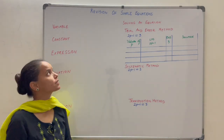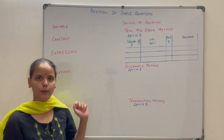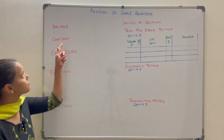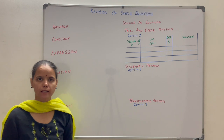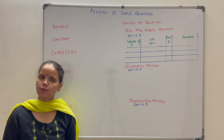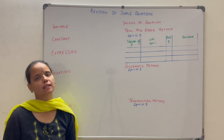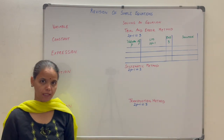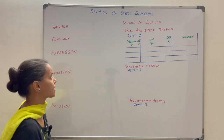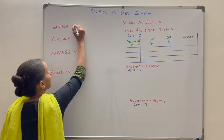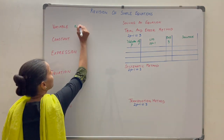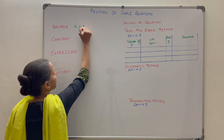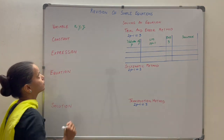Revision of simple equations. The first concept is variable. It is represented by the letters of the English alphabet. For example, x, y, z and so on.